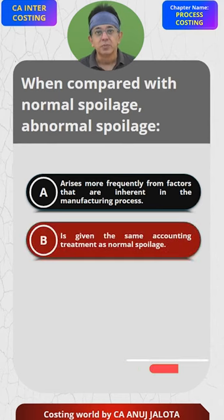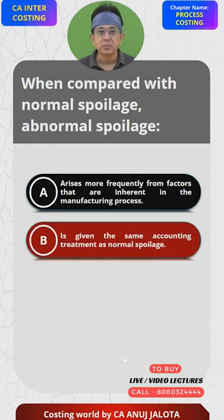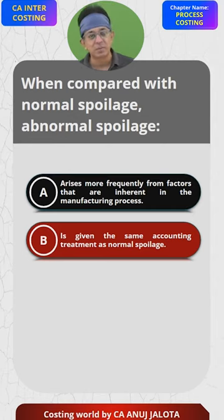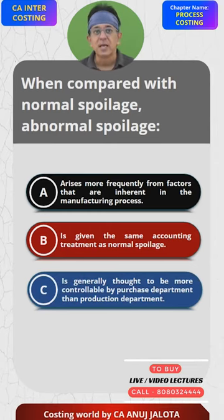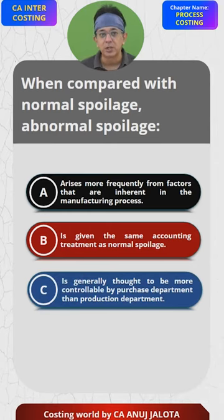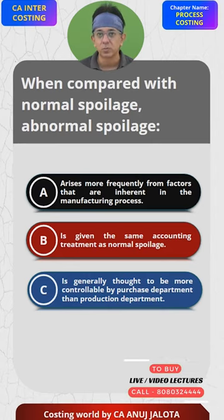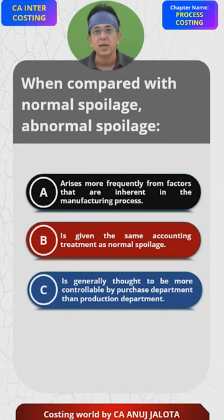Option B says abnormal loss is given the same accounting treatment as normal spoilage — of course not, because one of them is valued at scrap value and the other is valued at cost. Option C says it is generally thought to be more controllable by the purchase department and the production department.